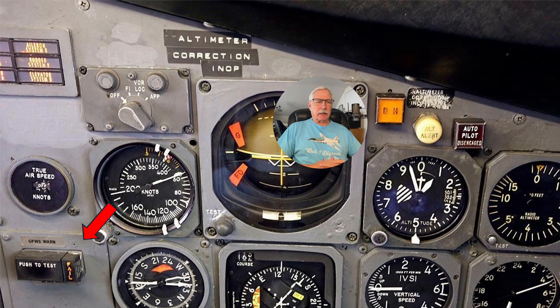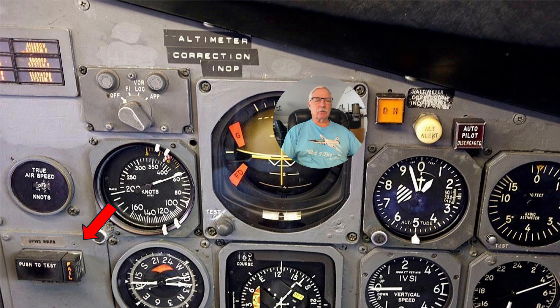But here's the basic, that little red arrow shows the GPWS warning there. The system, the early ones, simply operated off the radar altimeter. Now you guys that are flying now know about the terrain database and that is a super improvement, but early on it just looked straight down with the radar altimeter.